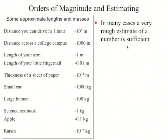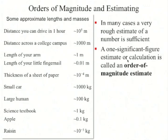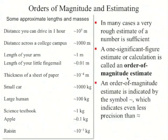In many cases, a rough estimate of a number is sufficient. One significant estimate or calculation is called an order-of-magnitude estimate, denoted by a single squiggly line. Here is a table of some approximate lengths and masses — for example, the distance across a college campus is about 1,000 meters, and a small car is about 1,000 kilograms.